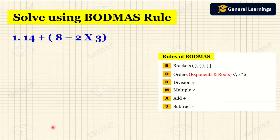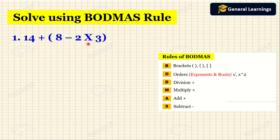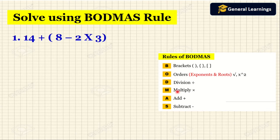Here they have given: 14 plus bracket 8 minus 2 into 3. According to the BODMAS rules, first we need to solve the brackets. Inside the bracket they have given two operations: one is minus and another one is multiplication. So first we need to do multiplication.